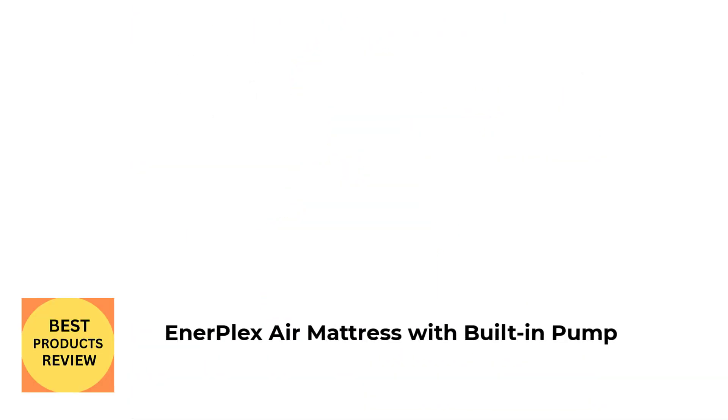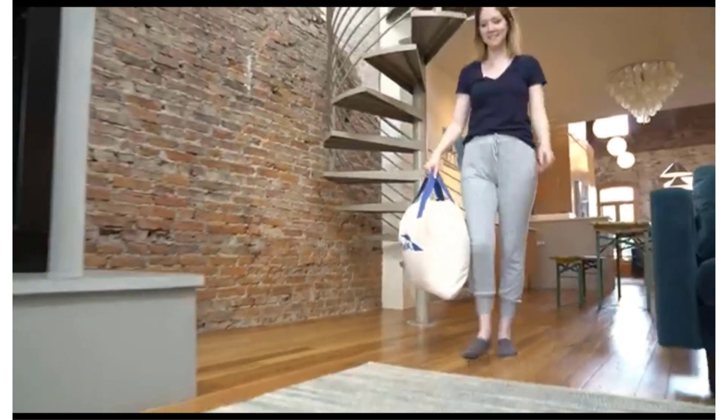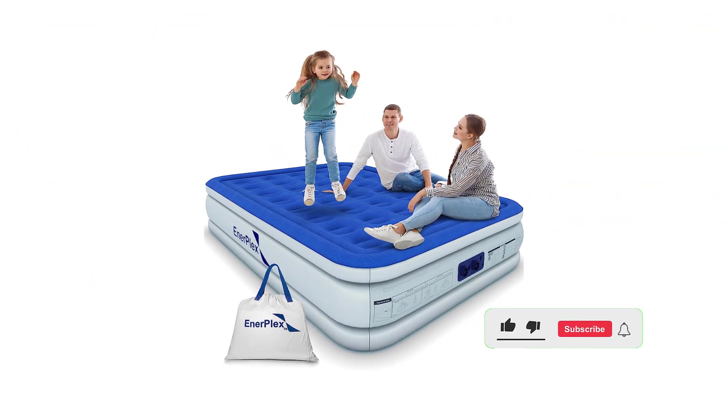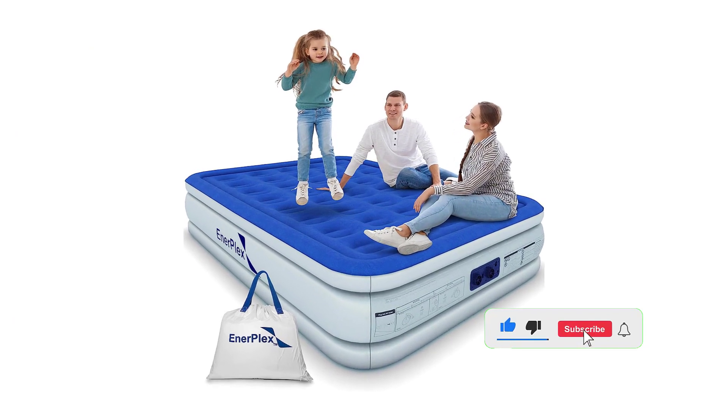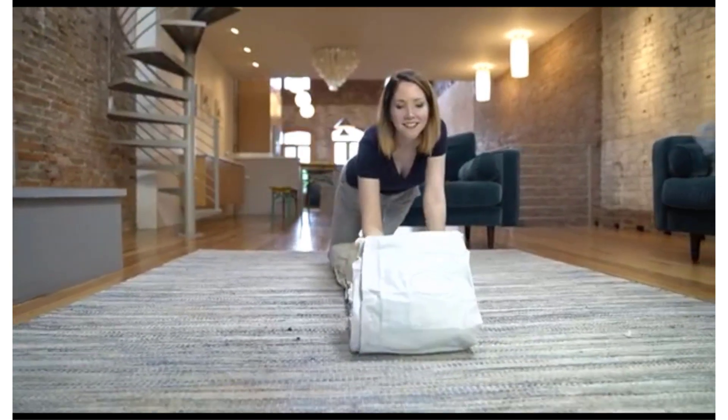Number 3: Enerپlex Air Mattress with Built-in Pump. The Enerplex Air Mattress is one of the most comfortable air beds that I've slept on. It has a built-in pump and comes in twin, full, queen, and even king sizes, with three different heights to choose from for most sizes: 13-inch, 16-inch, and 18-inch. The queen-size air mattress I have is the 13-inch height. It inflates in about two minutes and holds air well.